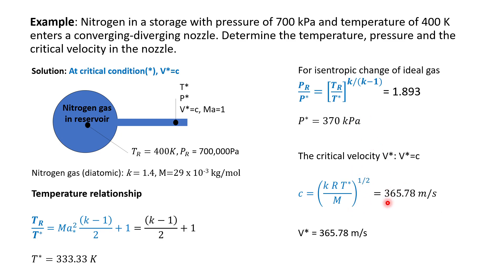By putting all parameters into the equations you find the solution. Note that for nitrogen the molar mass should be 28, so the solution shown may contain a typo error that needs to be corrected.